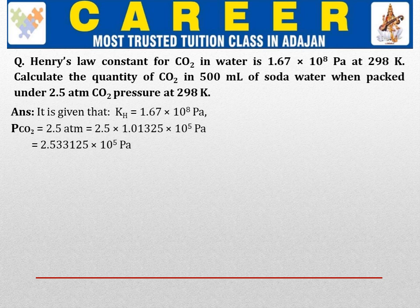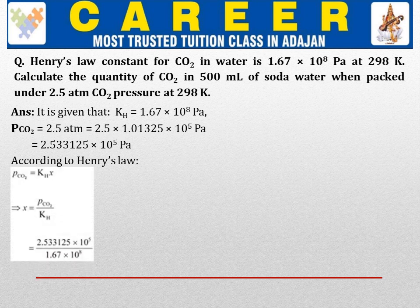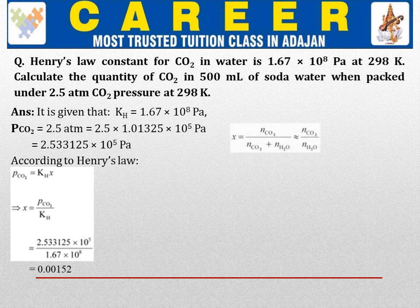Now we have pressure in Pascal. According to Henry's law, P = KH × X, so X = partial pressure of CO₂ / KH = 2.53 × 10⁵ divided by 1.67 × 10⁸. The mole fraction is found to be 0.00152. Now we need to convert the quantity in 500 ml of water. Mole fraction of CO₂ = moles of CO₂ / total moles. Since moles of water is very large compared to moles of CO₂, we approximate it as N_CO₂ / N_H₂O, neglecting moles of CO₂ in the denominator.